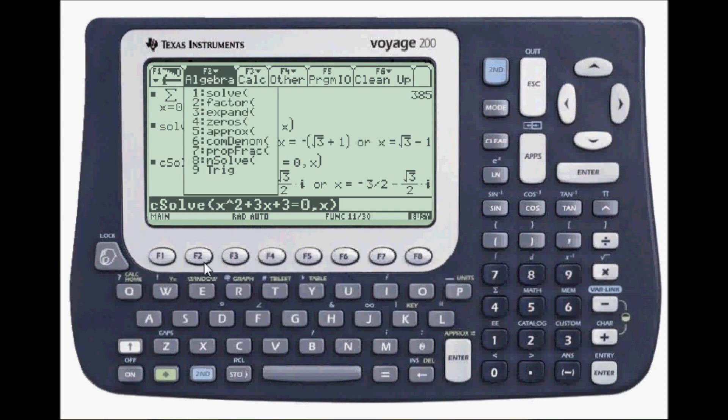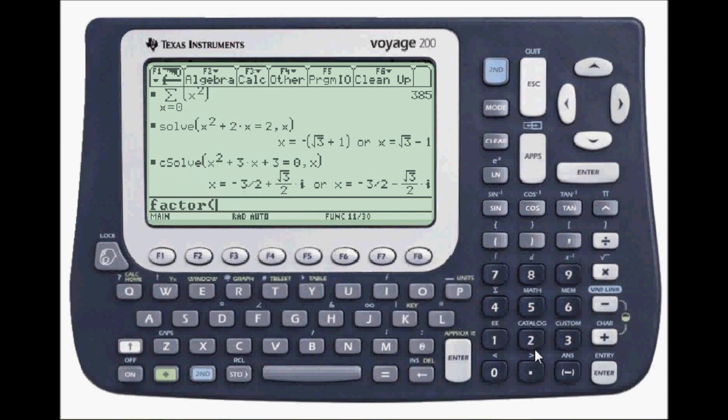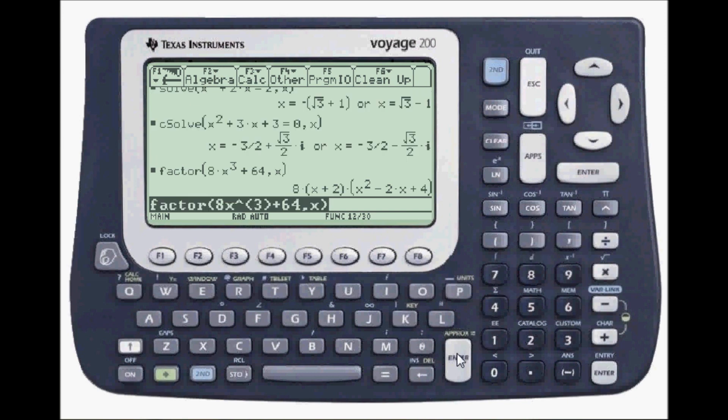Now, to factor. Press F2. Factor is number two. Here is a function to factor. Eight x cubed, plus 64. And x, close parenthesis. Press enter. And here is the factored form.